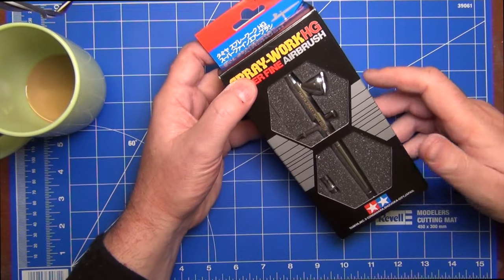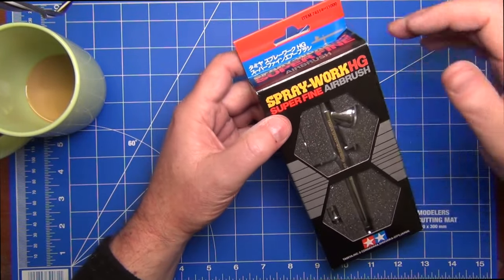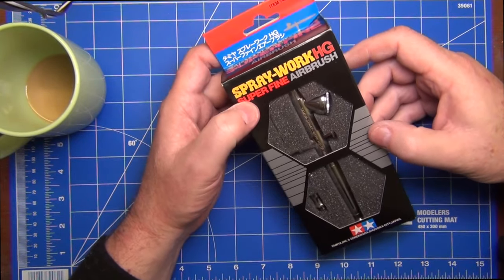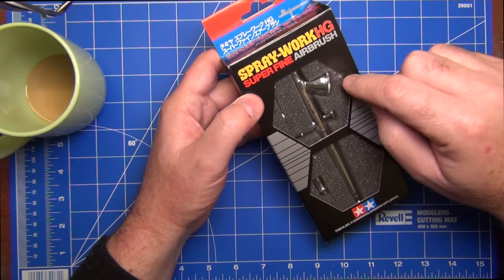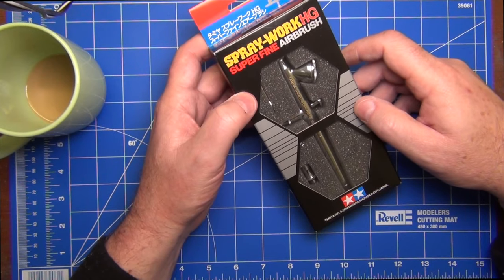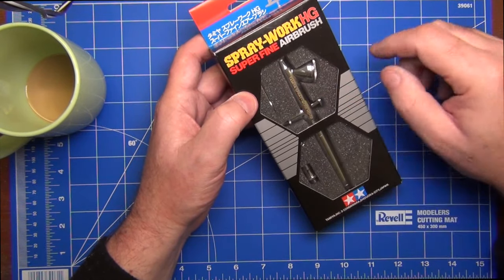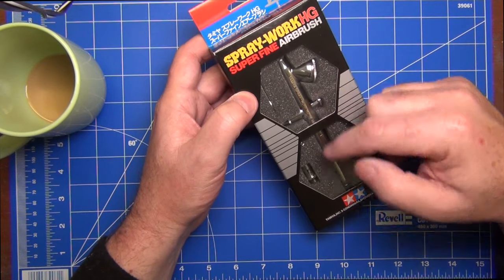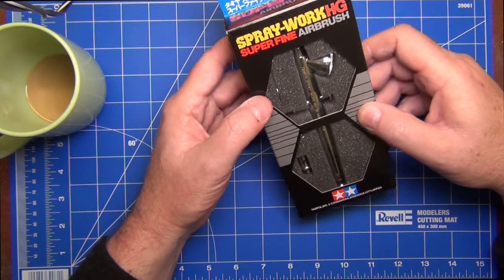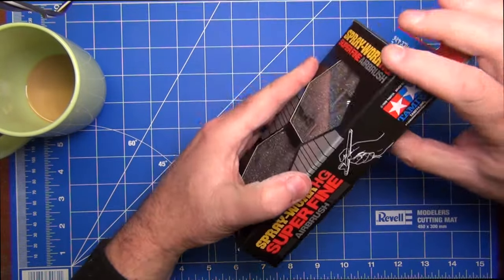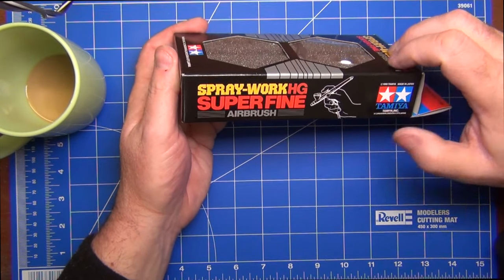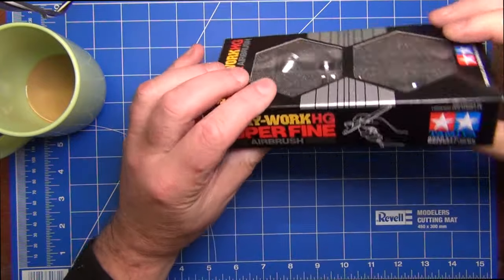As you can see the packaging is pretty straightforward, just a cardboard box designed to be displayed in retail stores. We have the Tamiya trademark hexagon look which they use for so many of their callouts and paint codes. These clear pieces let us look into the airbrush itself - fairly straightforward, one airbrush and a couple of accessories.